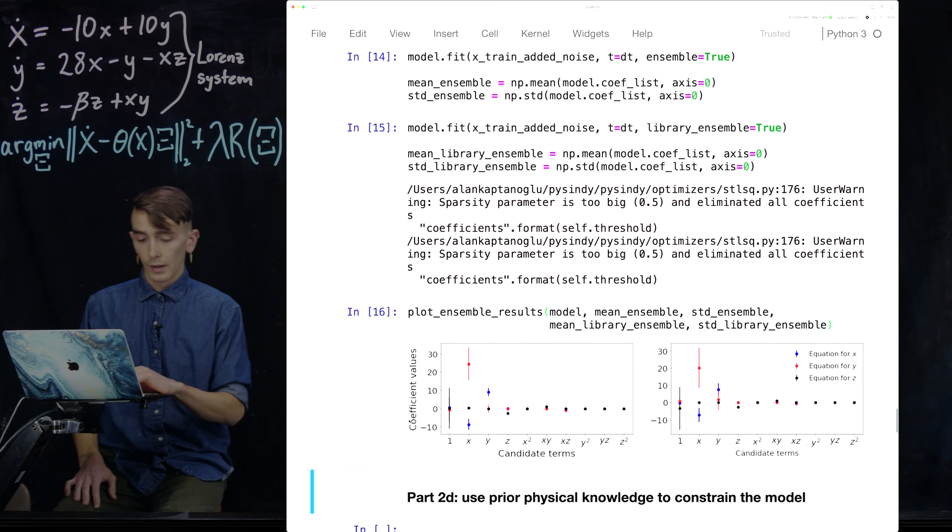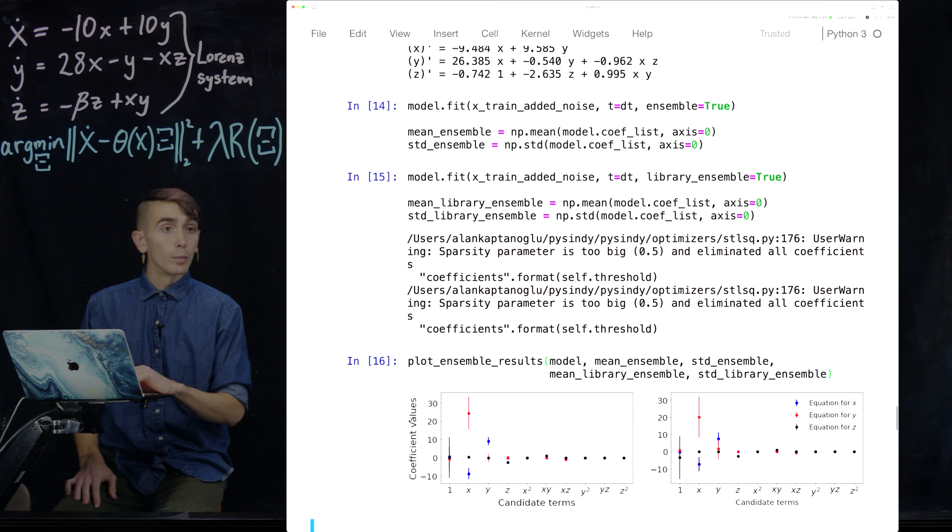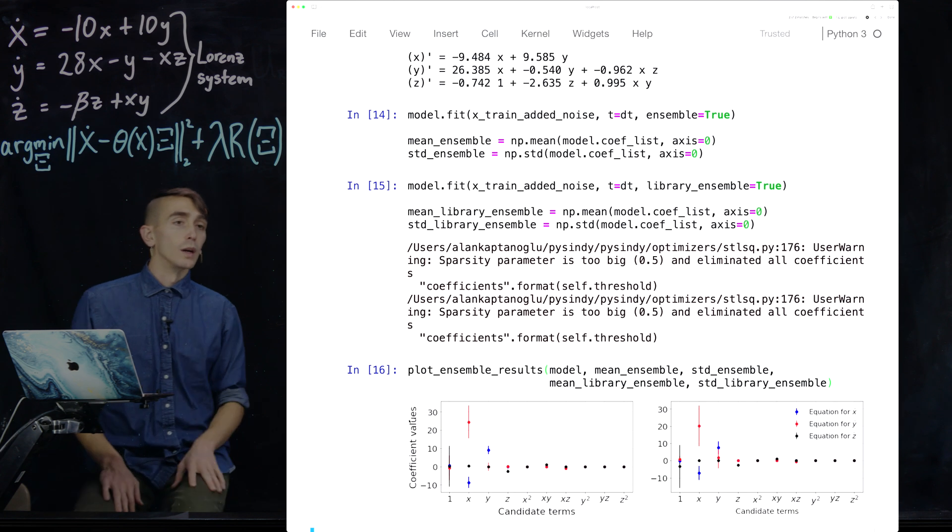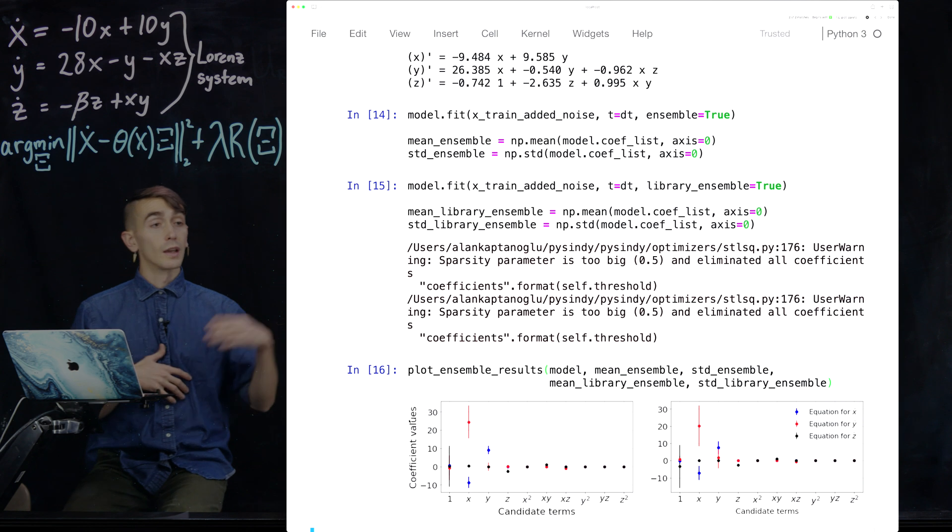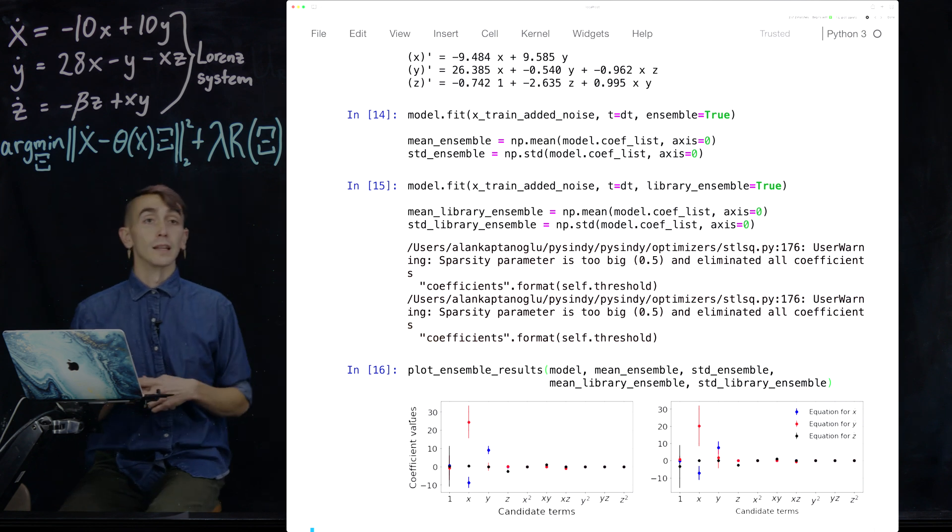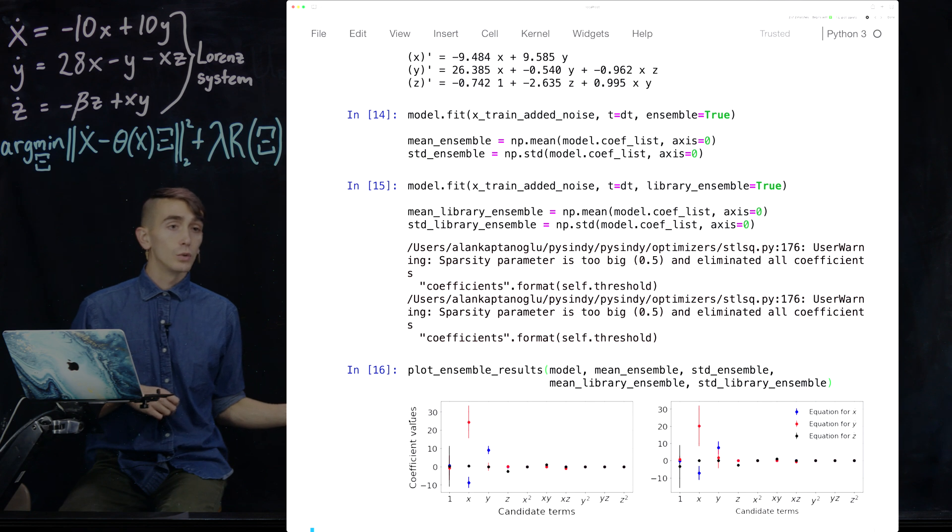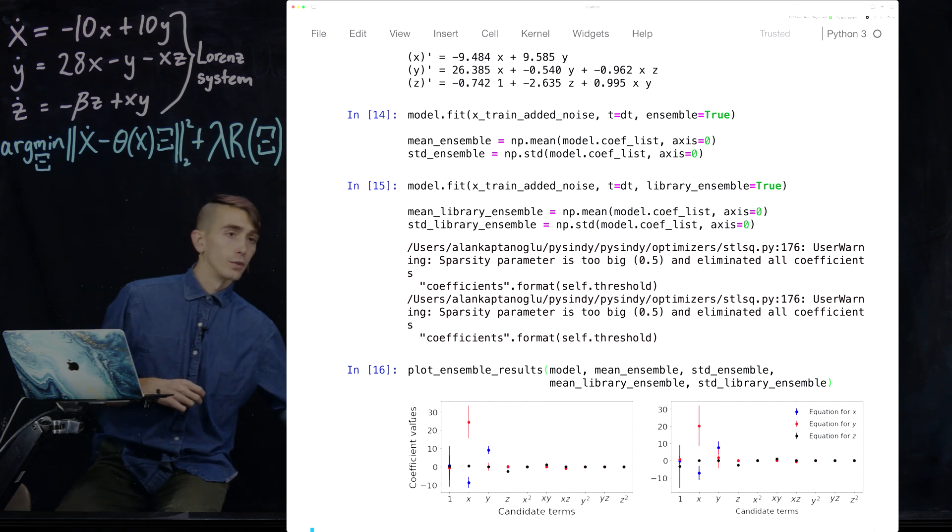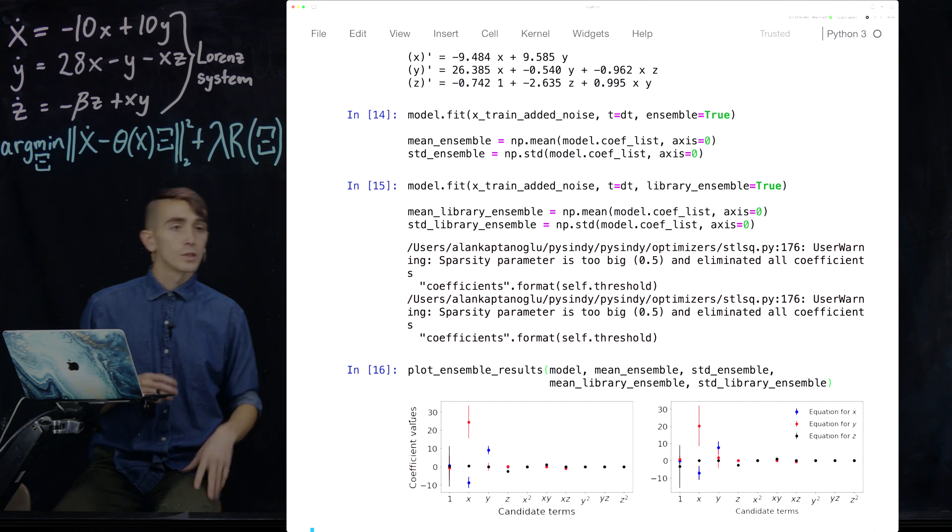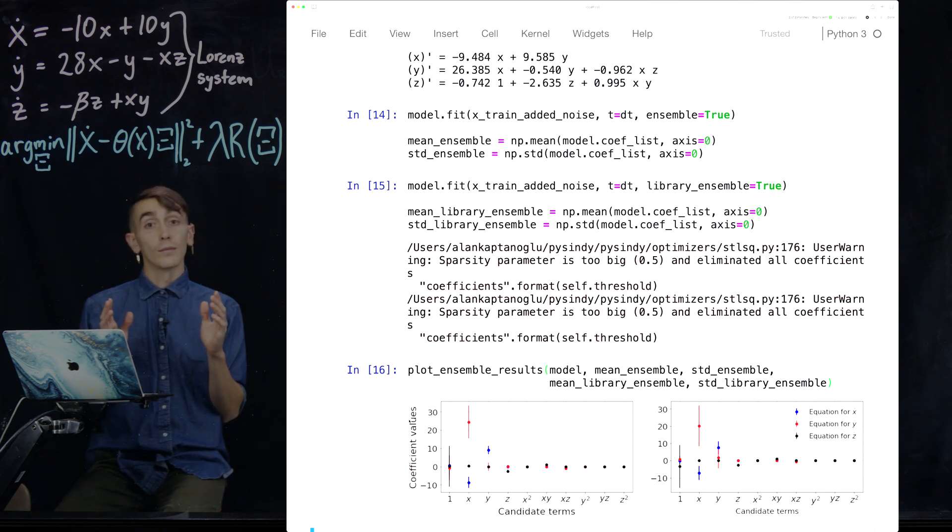Okay, so this is the kind of plot you might get. So on this left plot is the ensembling results and the far plot is the library ensembling results. And you can see each of these gives you not only the coefficient value. So you're looking at the coefficient value of each of these candidate terms.